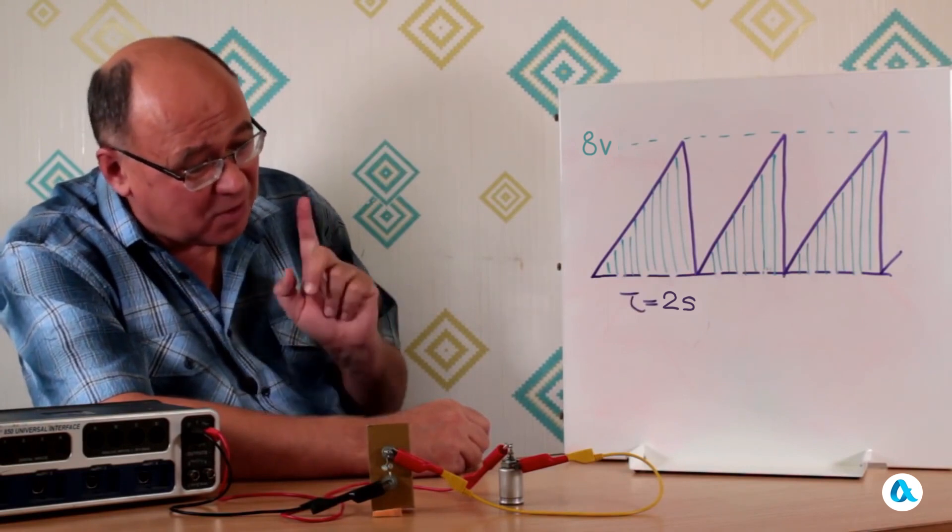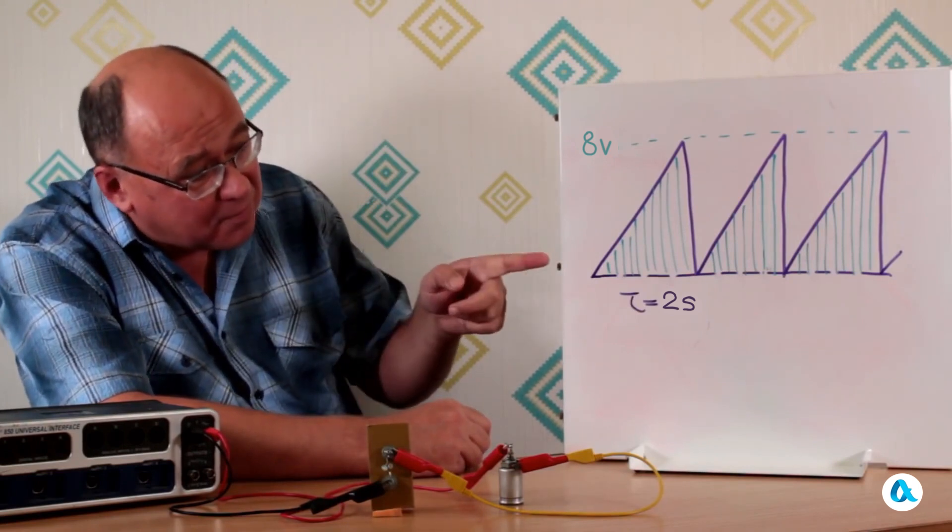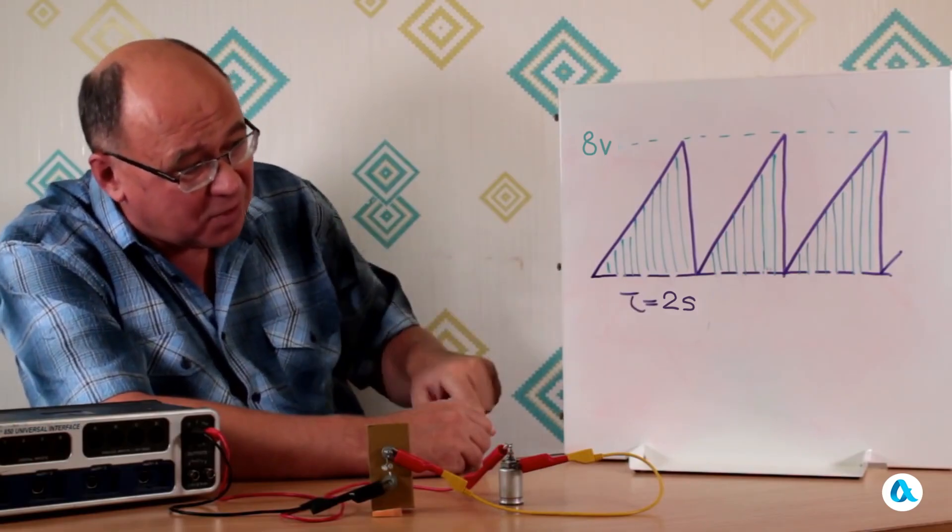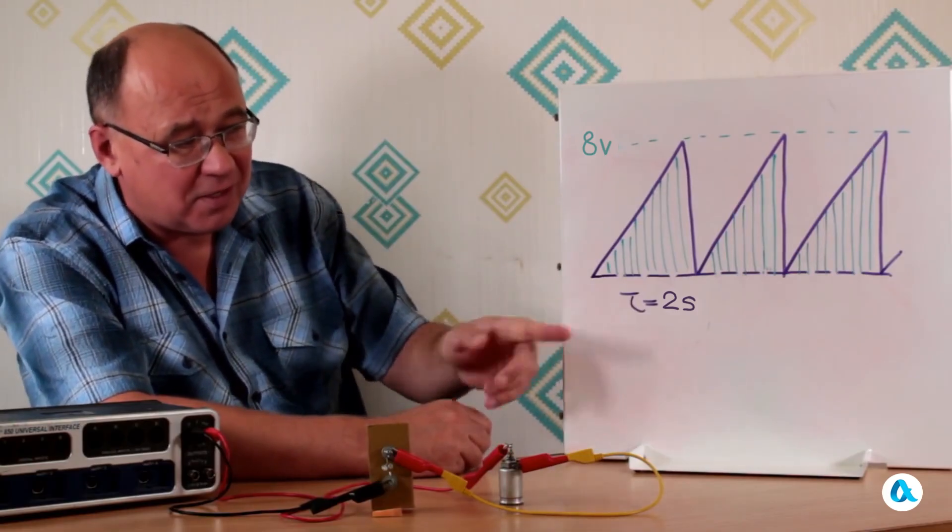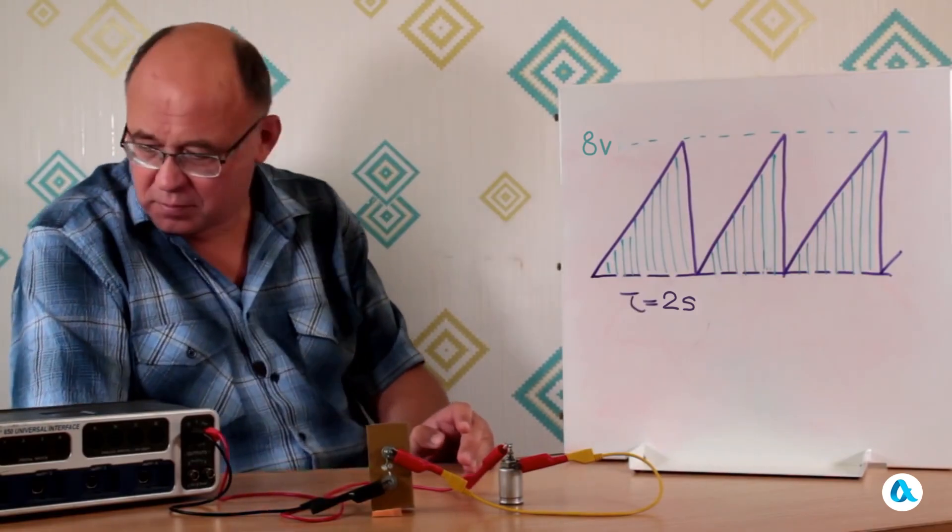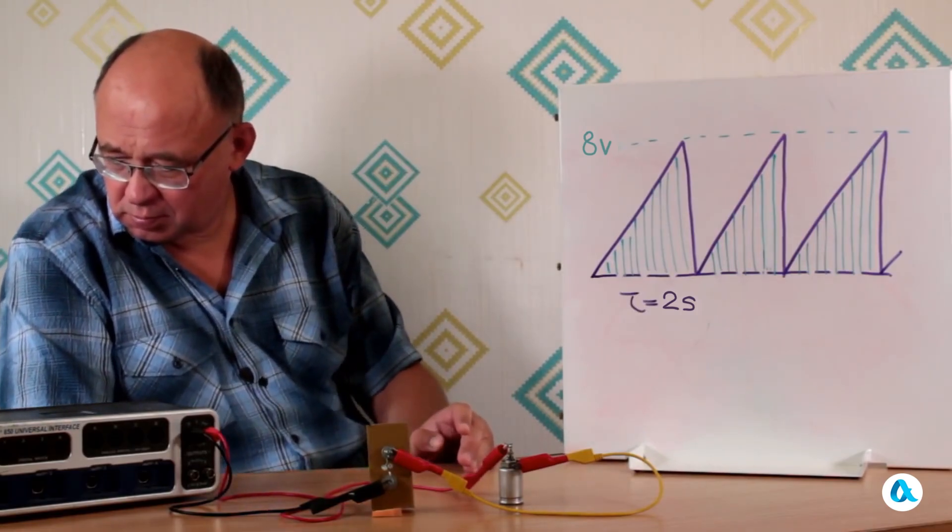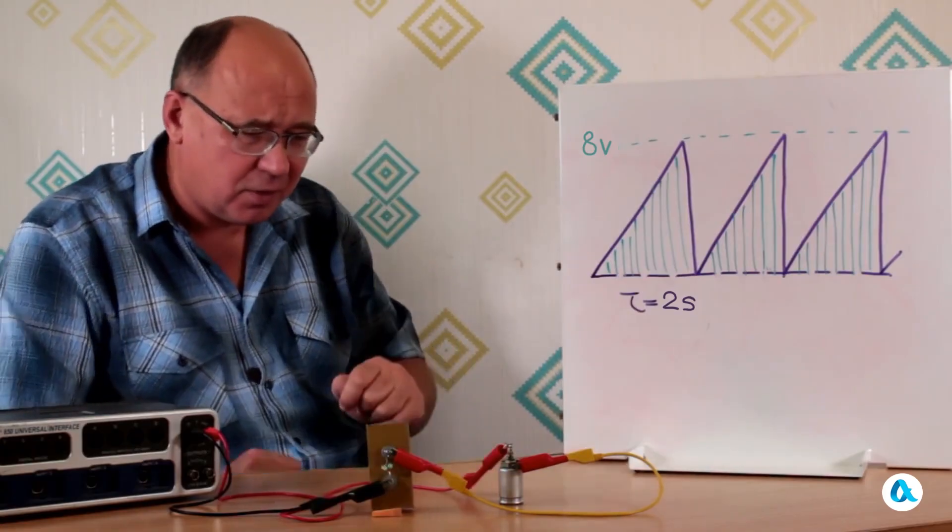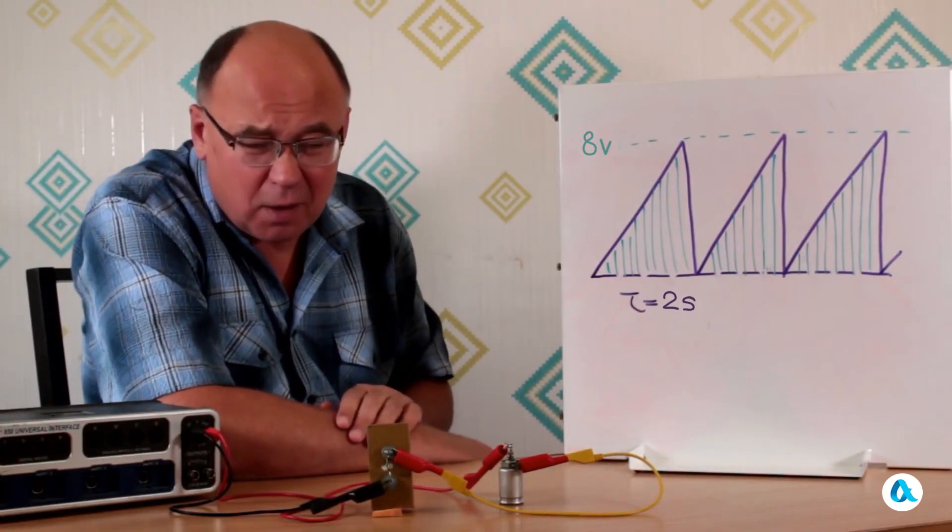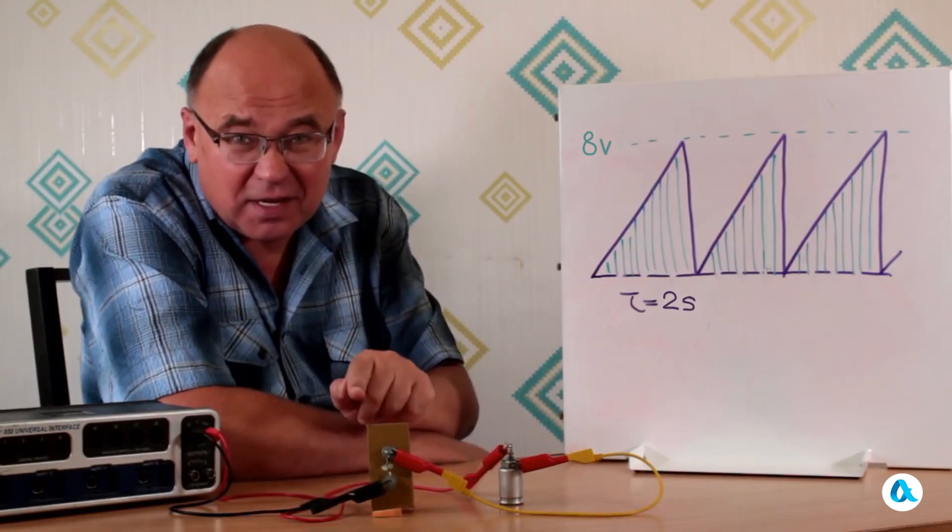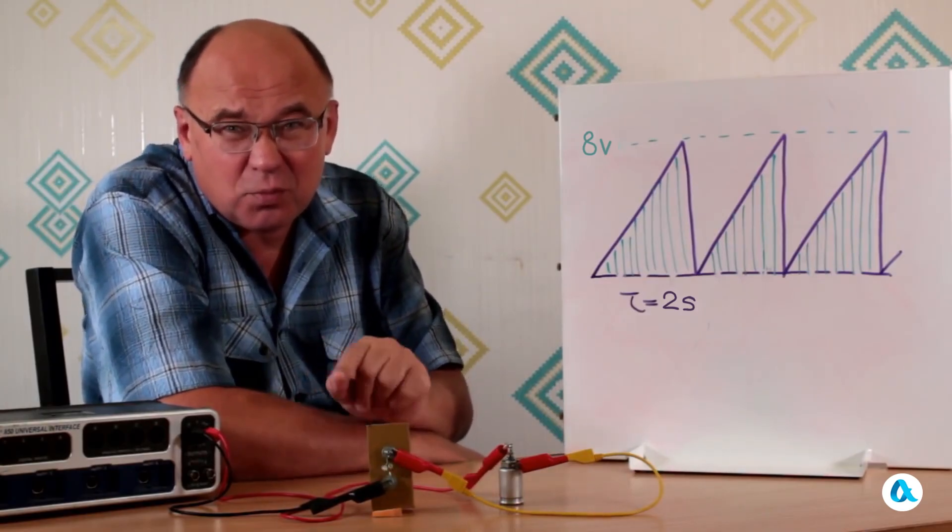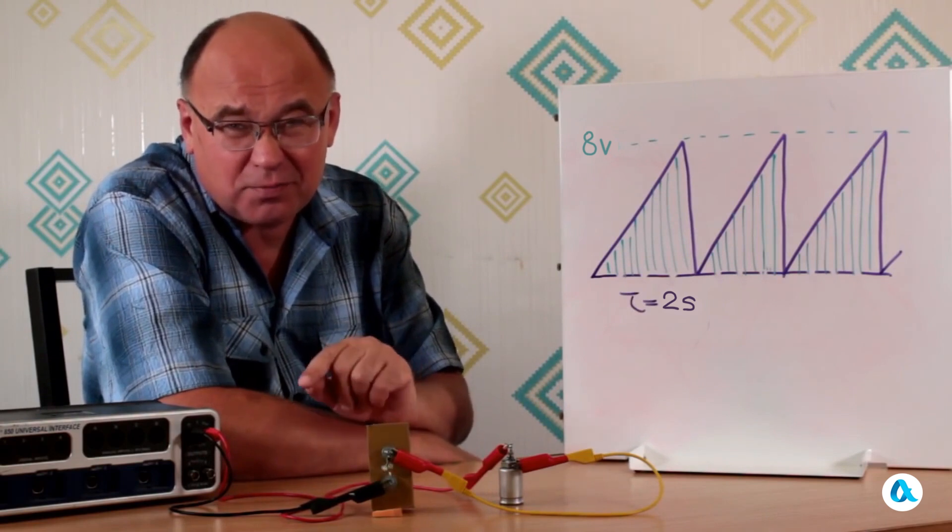We're going to apply a positive sawtooth voltage to our circuit, varying from zero to eight volts, and all of this will happen slowly. One cycle lasts two seconds. So let's turn it all on. Yes, of course a capacitor with a significantly larger capacitance is installed here. And now we can see the blinking. One of the LEDs stays lit for a certain period of time, while the other flashes for a very short moment.